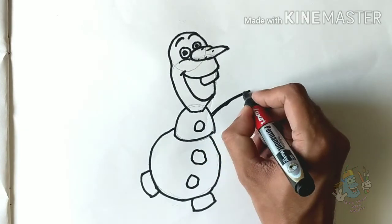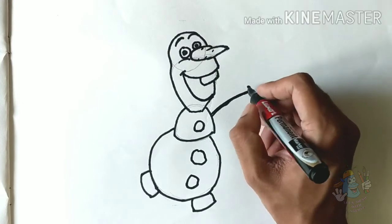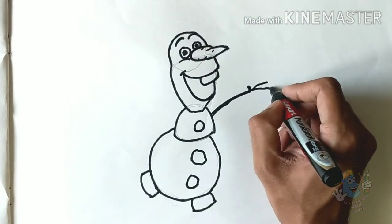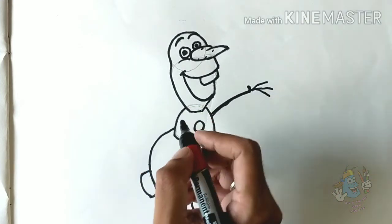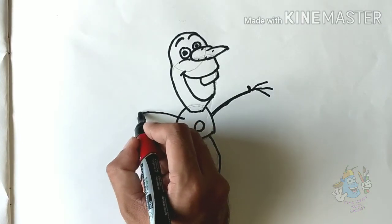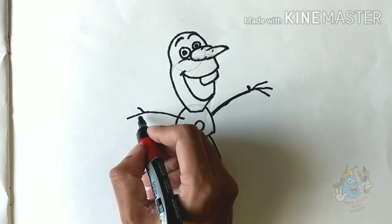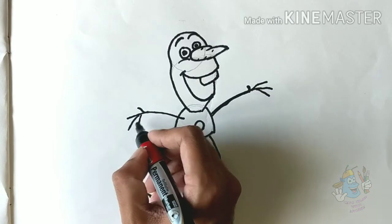Give him stick hands and arms. Just give a little wiggly line. They don't have to be perfect. They're branches after all.